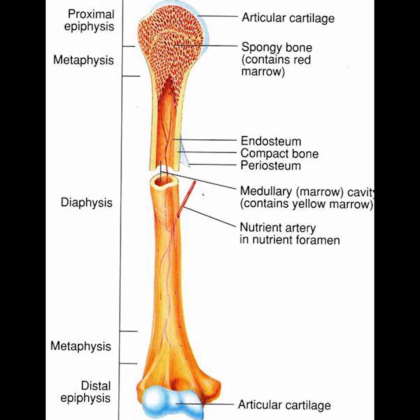The outside of the bone consists of a layer of connective tissue called the periosteum. The outer shell of the long bone is compact bone, then a deeper layer of cancellous bone, spongy bone, which contains in the medullary cavity the bone marrow.